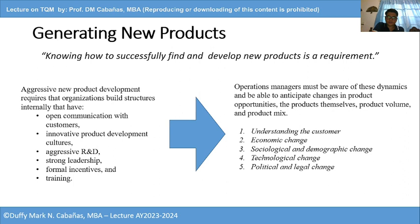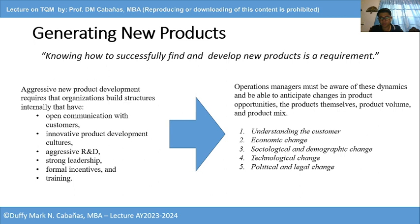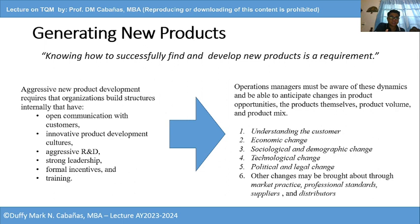Political and legal change is another area operations managers must be aware of. For instance, in the case of a well-known food chain where an employee incident occurred — regardless of judgment — actual events can impact employee quality, production, and the firm's operations because of existing political and legal changes. 'That's prohibited by labor law,' or 'that's a concern for workers' — these dynamics require operations managers to incorporate them into strategy. Other changes may be brought about through market practice, professional standards, suppliers, and distributors.